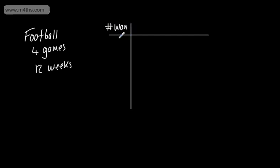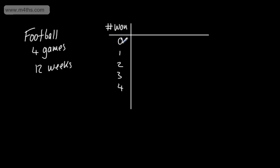I can win 0 games, 1 game, 2 games, 3 games, or 4 games. If I play 4 games, I can either win none, 1, 2, 3, or 4. These are discrete values — so I wouldn't have, for example, 0.62.